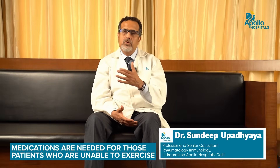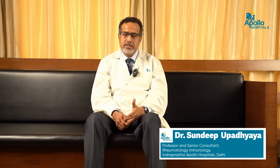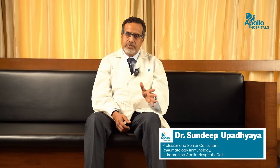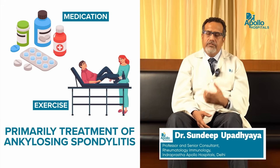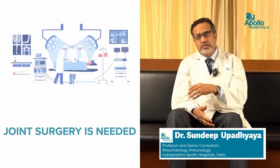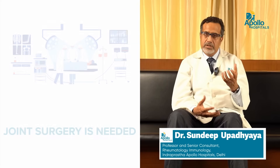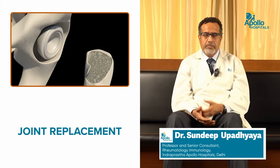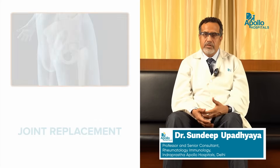AS is treated primarily with medications and exercise. Medications are needed for patients who do not do well with exercise alone, and mostly for those with moderate or severe spondyloarthritis. Patients with mild ankylosing spondylitis may only need exercise and physiotherapy. Treatment involves anti-inflammatory medications and physiotherapy; if those fail, biologic therapies are used. When biologic therapy fails and a joint is completely destroyed, surgical intervention by orthopedic surgeons — joint replacement or implants — may be necessary.